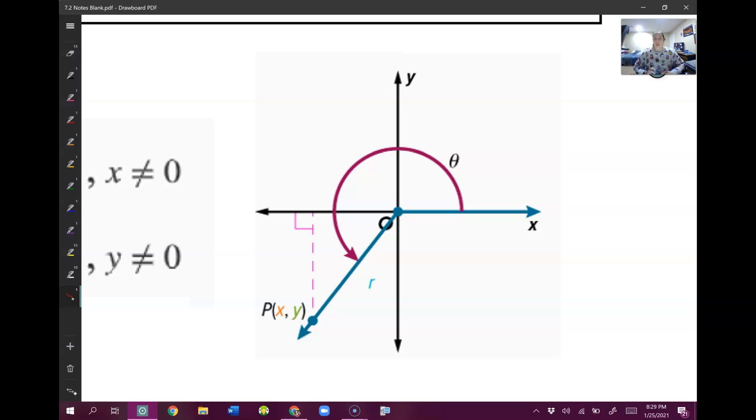Now, this picture should look familiar from 7.1, where we have our initial ray here, and our terminal ray here, and our angle goes from the initial ray to the terminal ray. That's something we talked about in 7.1.